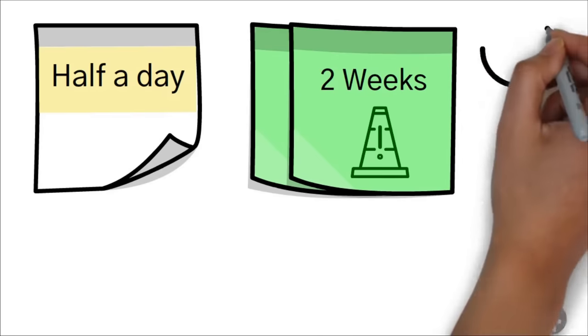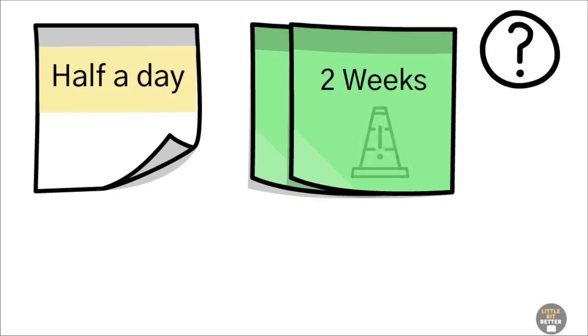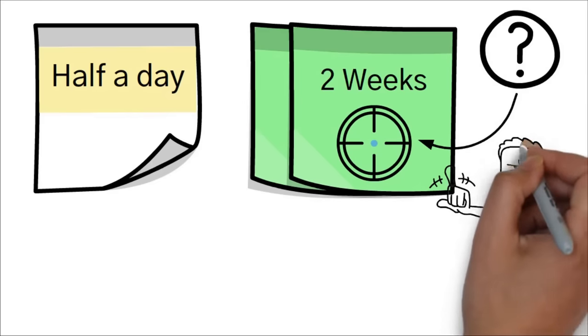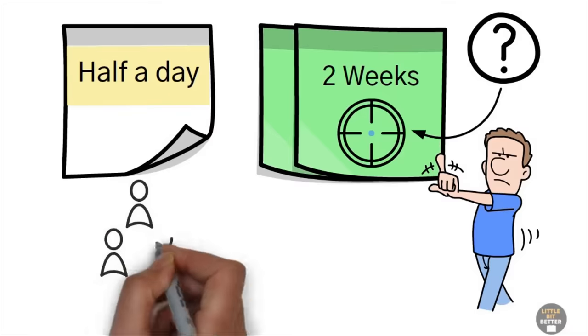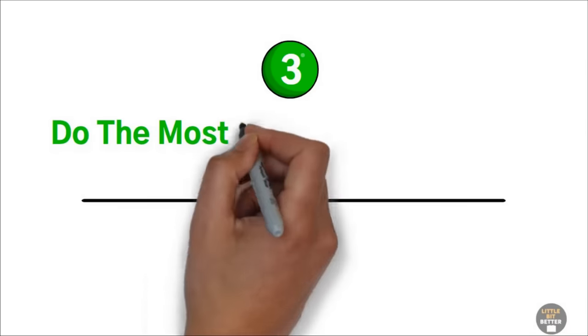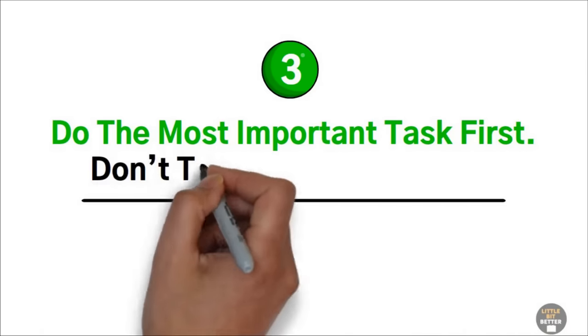If you think about it, who does that? I mean, who focuses on one thing for two weeks and says no to everybody and everything? I admit it's not easy. This is probably why only a few people become effective. Number three, do the most important task first. Don't touch the second one.